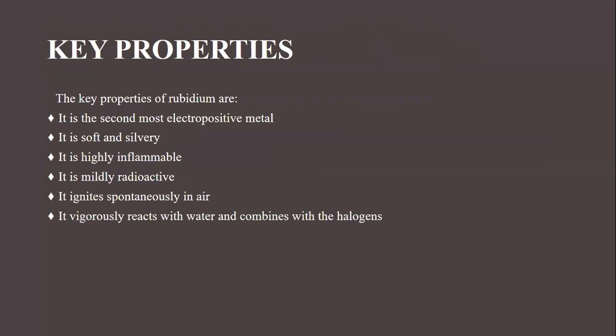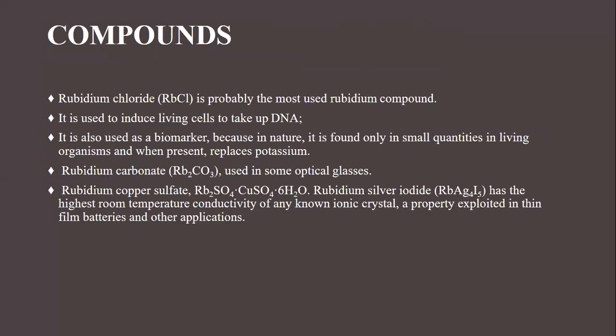Next, the key properties of rubidium. It is the second most electropositive metal. It is very soft and silvery. It is highly flammable, mildly radioactive, and vigorously reacts with water and combines with hydrogen compounds. Rubidium chloride is probably the most used compound — it is used to induce living cells to take up DNA. It is also used as a biomarker because in nature it is found only in small quantities in living organisms, and when present, it replaces potassium.